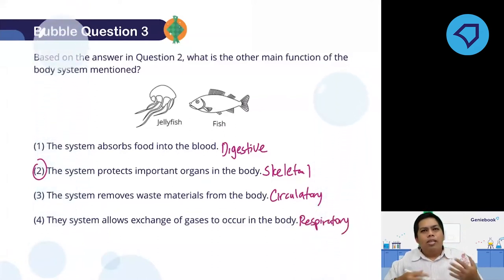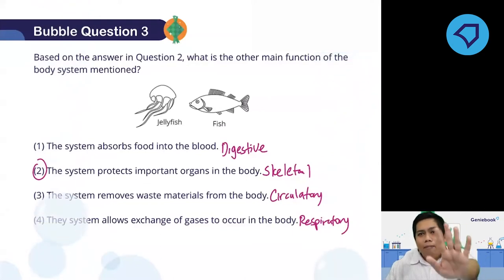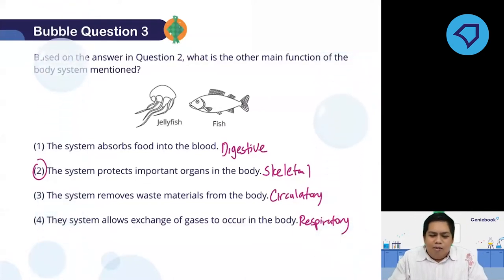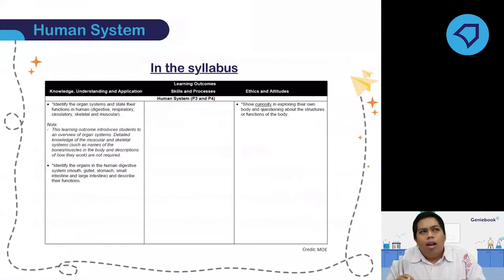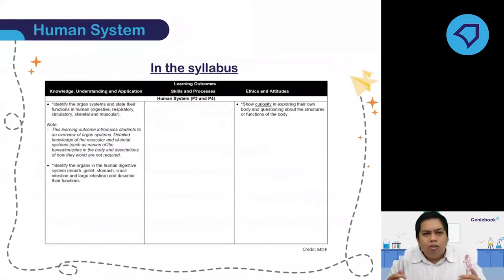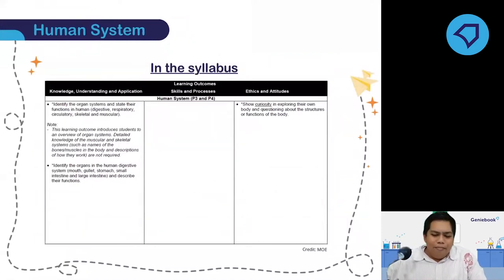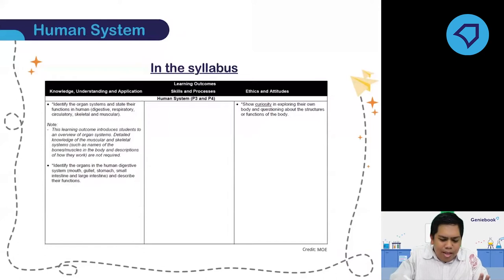I hope these three questions helped you refresh your memories on the five body systems. Let's move on to the next slide. So firstly, the syllabus — you must know the important things you need to learn for this topic. You can look at the MOE website and search for your primary science syllabus. The first point — we already covered it last week: identify the organ systems and state their functions. We just revised that, and the digestive system will be next week.